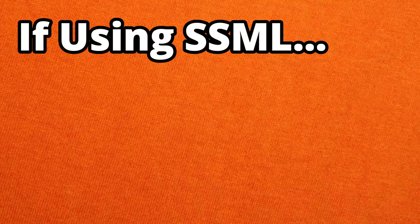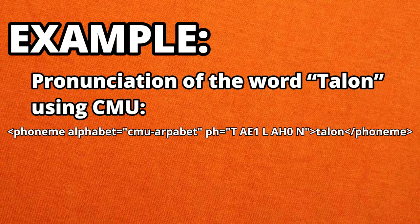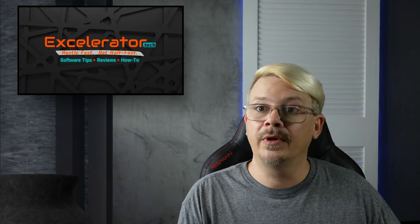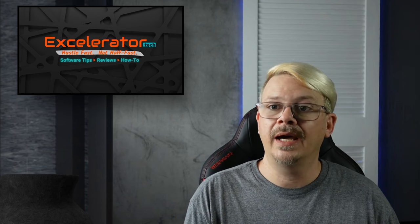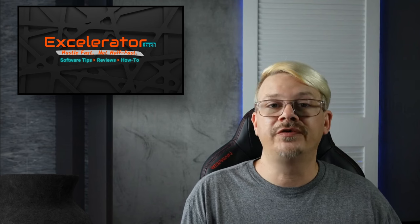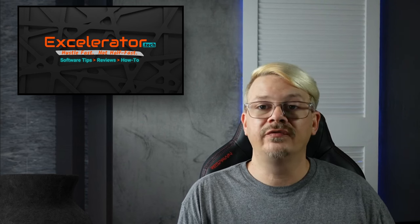If you're using SSML, it's pretty important to specify which syllable gets the stress, or it might end up being pronounced incorrectly. For example, a tag for speaking the word 'talon' specifies that the stress is placed on the AE and no stress on the AH. Using SSML for pronunciation is a single word thing — one word at a time. So if your text includes someone's first and last name and you want them pronounced a certain way, you've got to create one tag for the first name and one tag for the last name, and you'd also have to know what all those phonetic codes are.